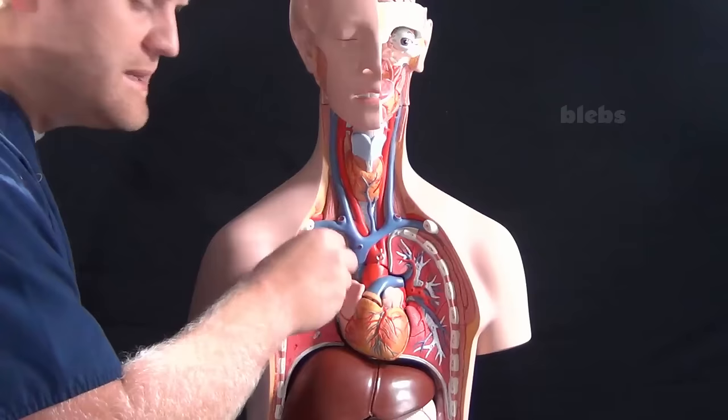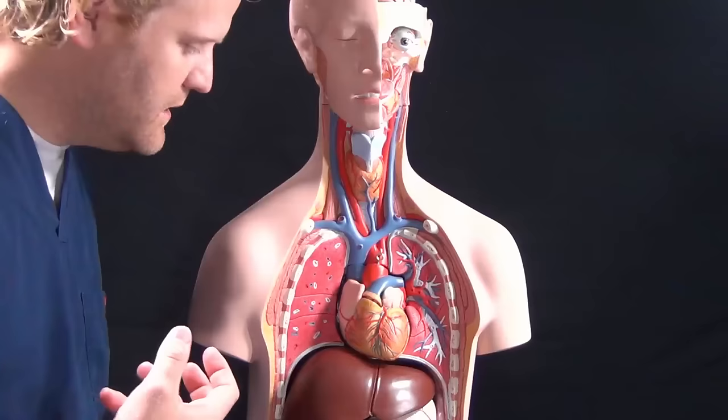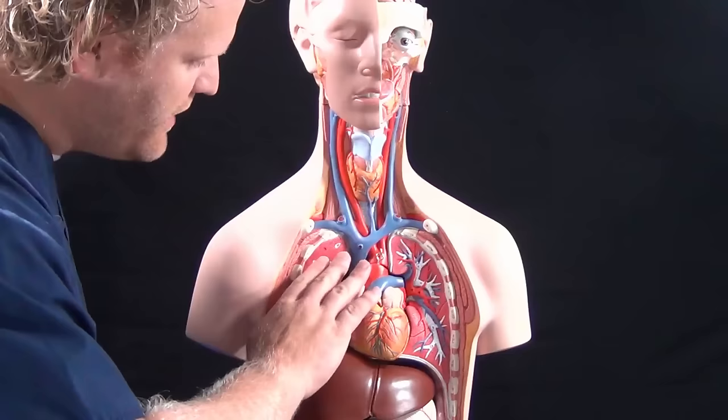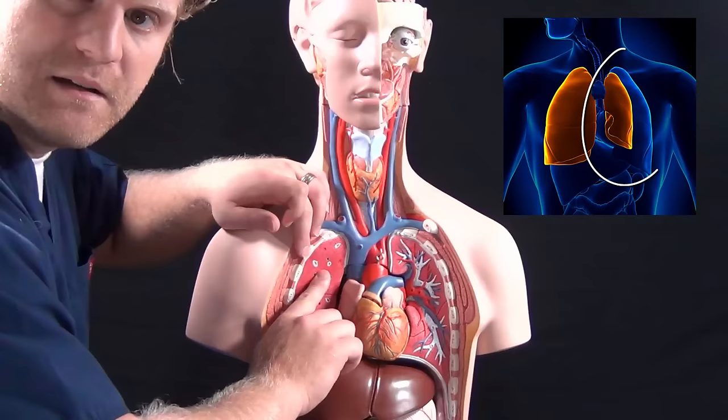And once they rupture, you can imagine that air comes rushing out of our lung and it begins to fill that pleural space. Now there's nowhere really for that air to go other than into this pleural cavity. So what will happen is the air begins to compress this lung down. The lung becomes compressed as this space fills with air.